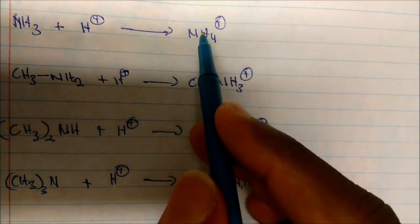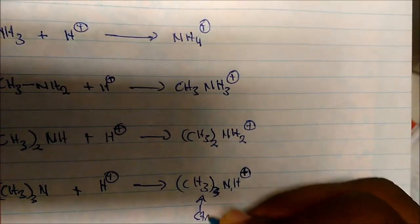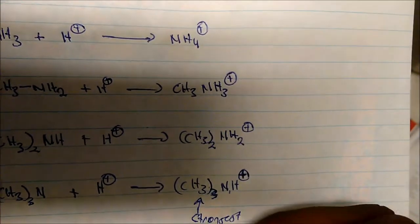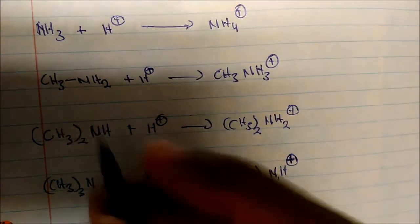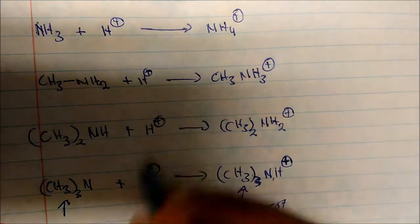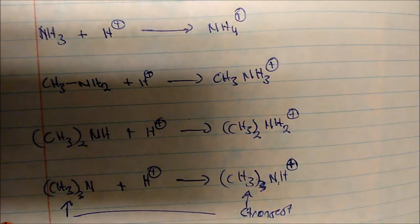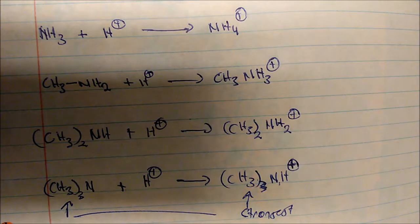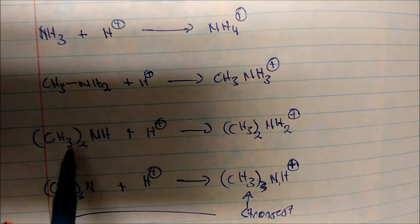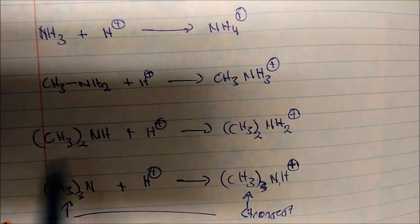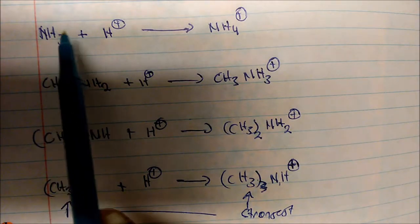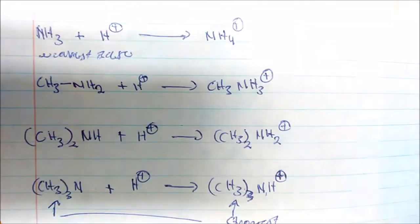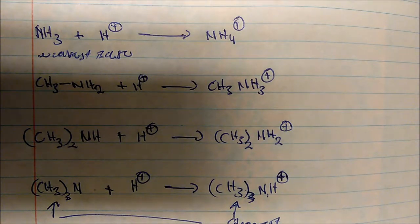Trimethylamine will actually be the strongest base because it has three electropositive atoms supporting that positive charge. Dimethylamine comes second with two, methylamine has one, and ammonia has none — so ammonia is actually our weakest base. You can see the difference between ranking stabilization in acids versus bases and determining which one is actually the strongest.